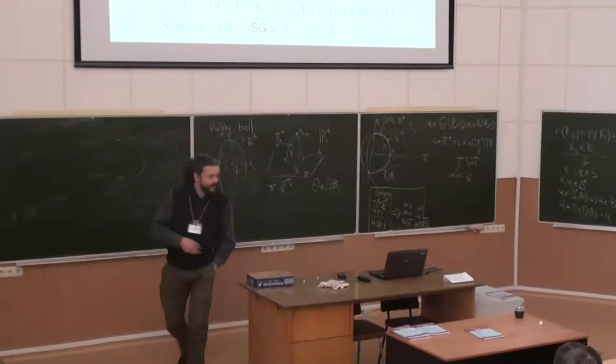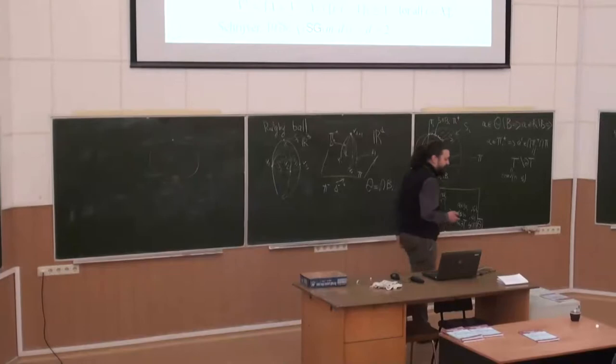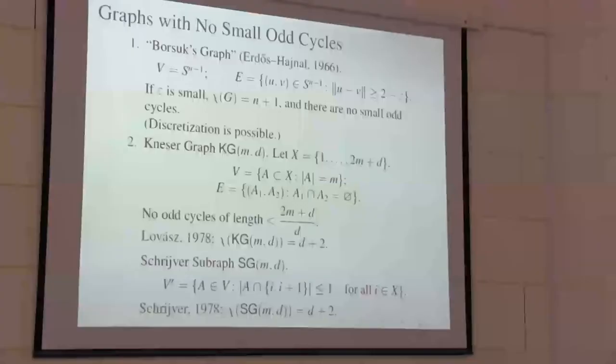Schrijver improved this example by taking an appropriate subgraph — he took only those vertices, those subsets of this set, which do not contain two consecutive numbers in a cyclic order. He showed that the chromatic number of this graph is also d+2, and moreover, this graph is vertex-critical.